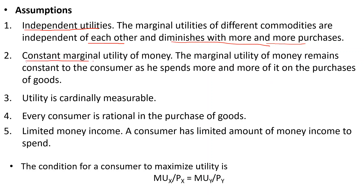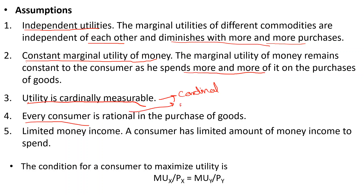The second assumption is constant marginal utility of money — the marginal utility of money will remain constant to the consumer as he spends more and more on the purchase of goods. The third assumption is that utility is cardinally measurable, i.e., utility can be measured. Fourth, every consumer is rational in purchase — his aim is maximum satisfaction. Fifth is limited money income — a consumer has a limited amount of money income to spend on more than two commodities.